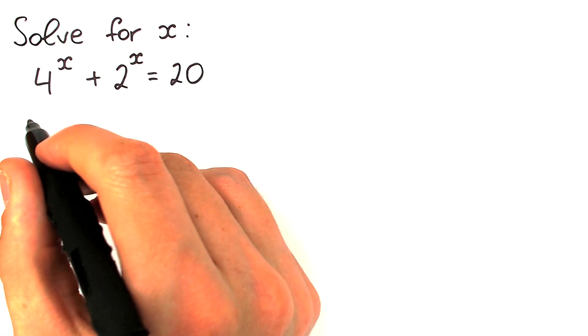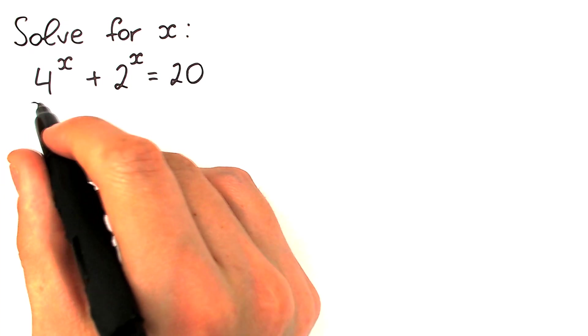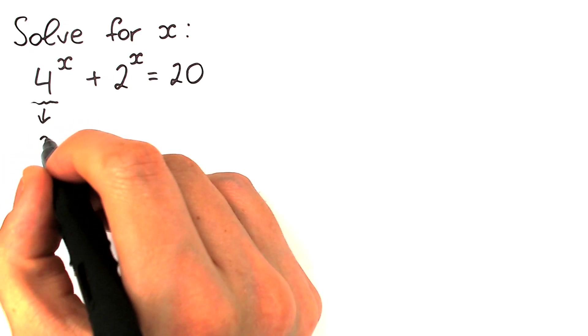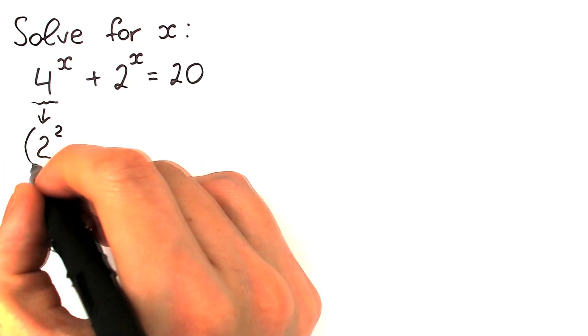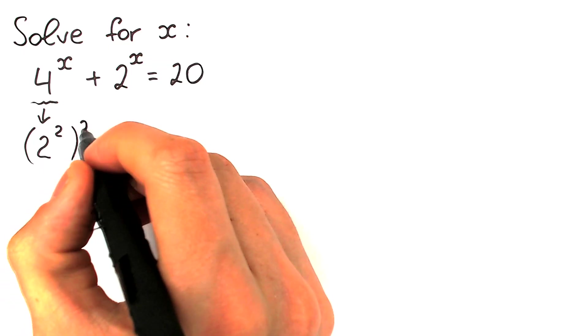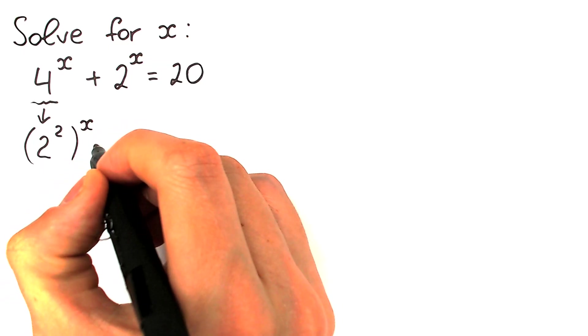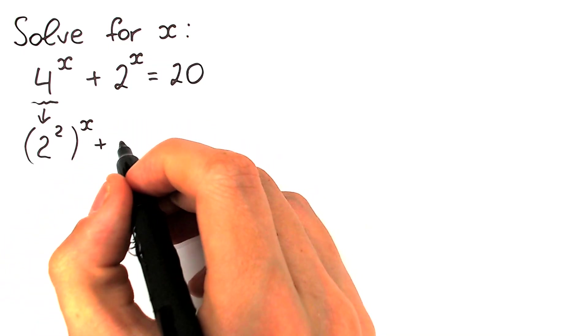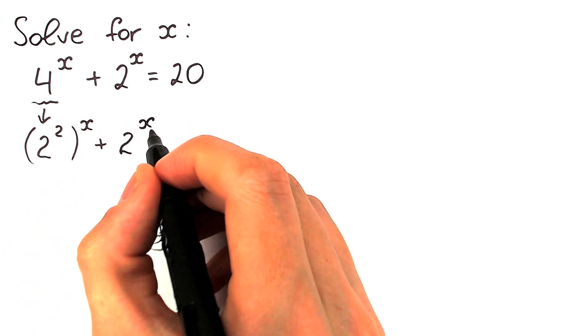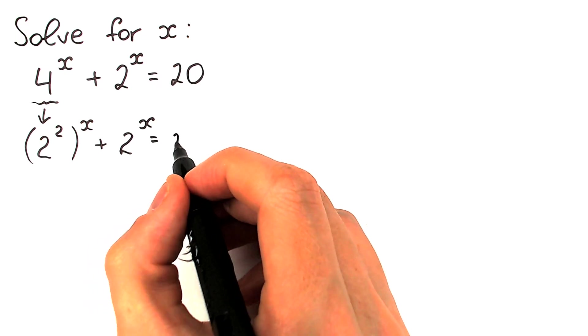So let's write this 4 as 2 squared: we have 2 to the power 2, raised to the power x, plus 2 to the power x, equal to 20.